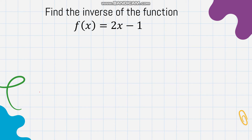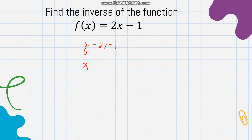Now what if an equation is given instead of ordered pairs? Let's find the inverse of f(x) = 2x - 1. Going back to the steps: first, change f(x) to y, so we have y = 2x - 1. Then interchange the variables x and y, giving us x = 2y - 1.